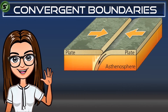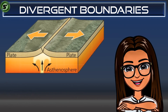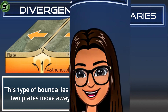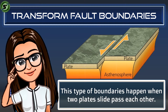Convergent boundaries happen when two tectonic plates move toward each other. This type of plate boundary makes the plates collide or bump into one another. The next type, divergent boundaries, is the exact opposite — divergent boundaries occur when two plates move away from each other; the plates are divided and move separately. The last type happens when two plates slide past each other — the plates move side by side, where one plate glides past the other.